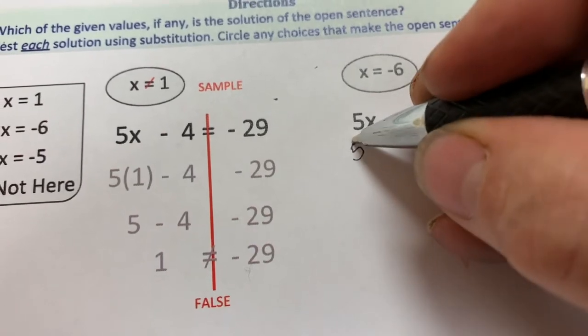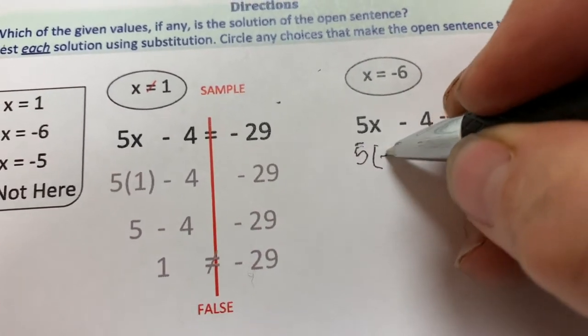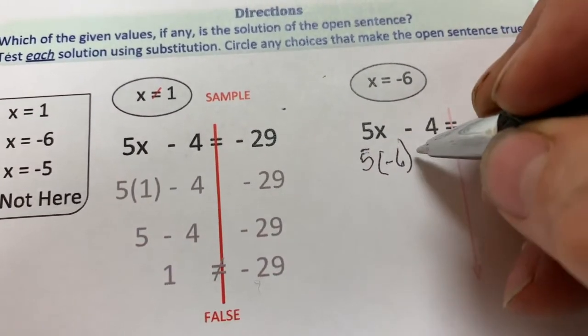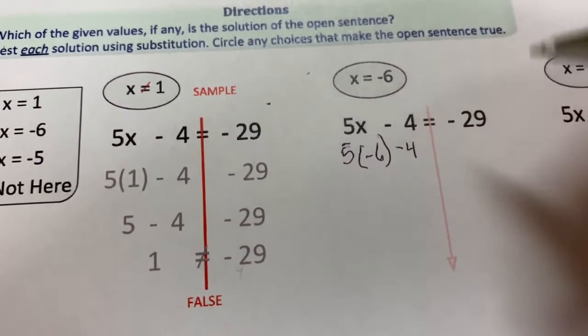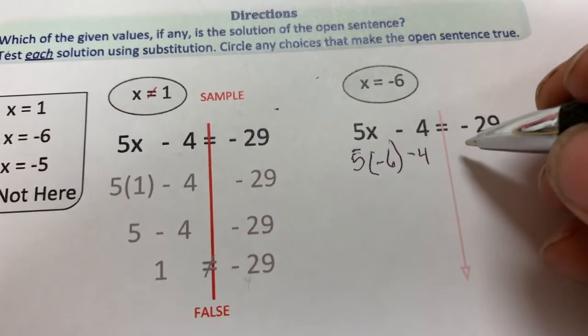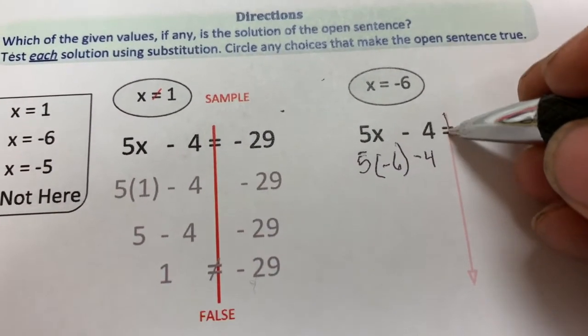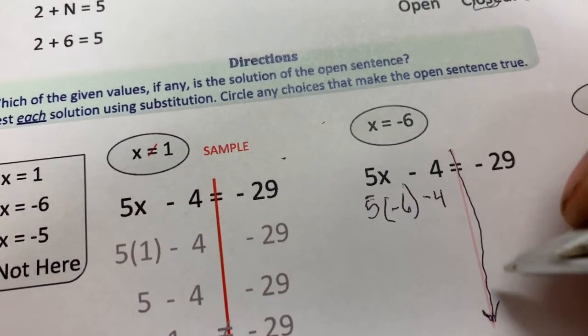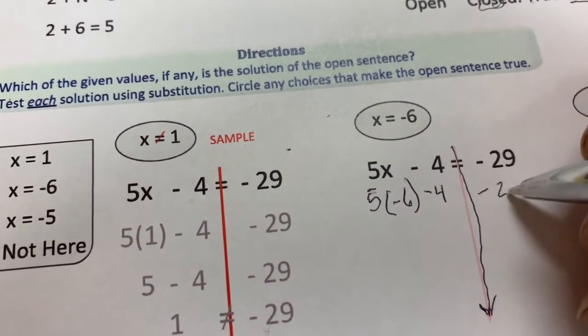So, 5 times negative 6 minus 4. I'm not going to put an equal sign in here because I don't know if it's equal. I am going to put a big line down here where the equal sign would go. Negative 29.